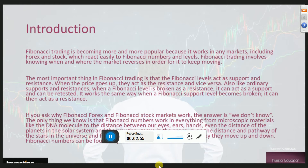Fibonacci trading is becoming more and more popular because it works in any market, including Forex and the stock market, which react easily to Fibonacci numbers and levels. Fibonacci trading involves knowing when and where the market reverses. The most important thing is that Fibonacci levels act as support and resistance. When the price goes up, they act as resistance, and vice versa. Like ordinary support and resistance levels, when a Fibonacci level is broken as resistance, it then becomes a support and can be retested as price moves.